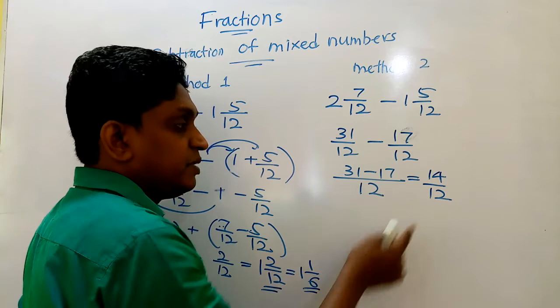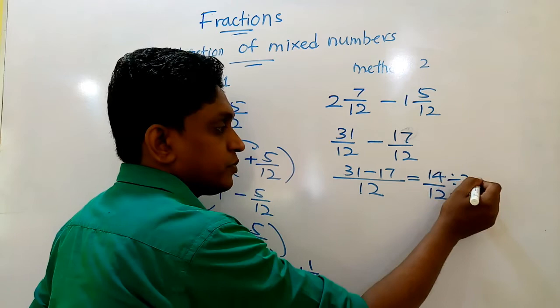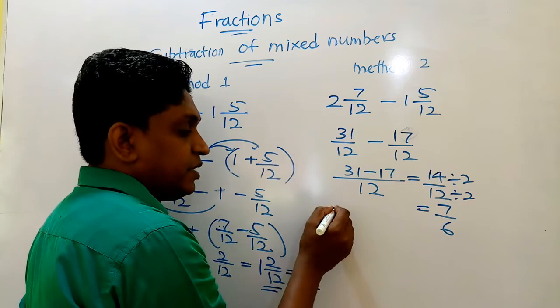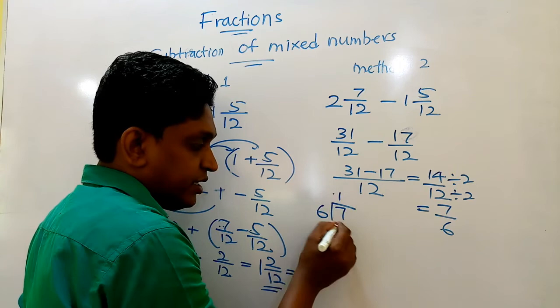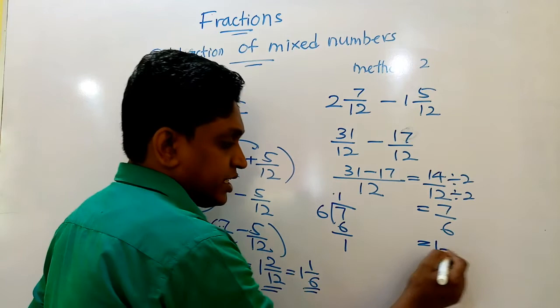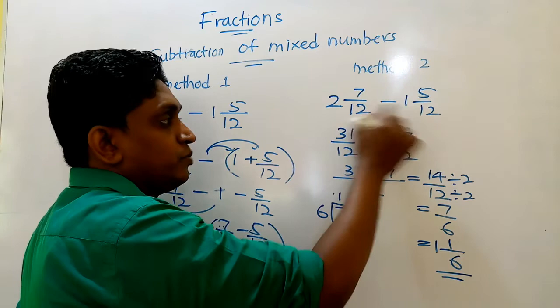14 over 12. So 14 over 12 can be simplified before writing that as a mixed number. So we know these are divisible by 2. So answer is what, children? 7 over 6. This 7 over 6 can be written as a mixed number. How many 6s in 7? It is 1. 1 into 6 is 6, remaining 1. So this 1 is the whole number. Denominator is 6. Remaining is 1.